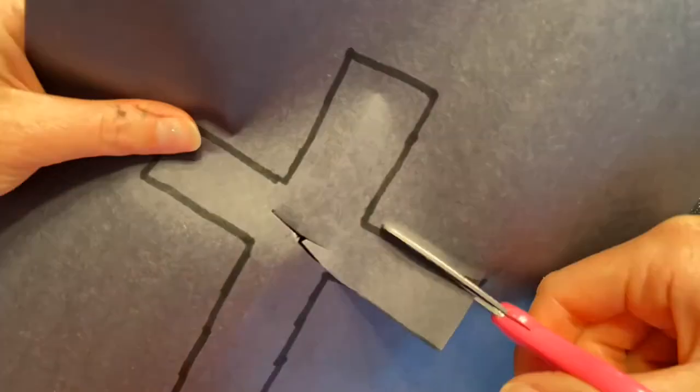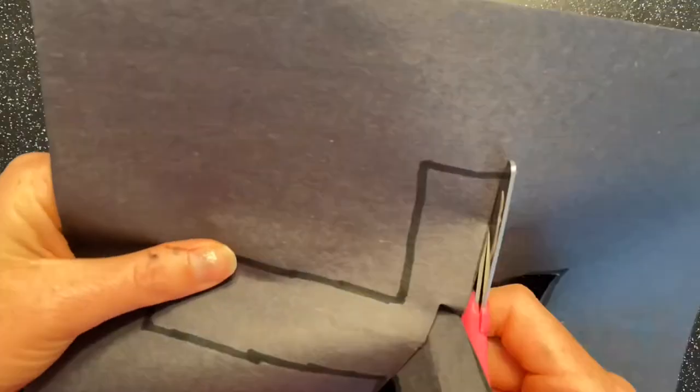Fold your cross and cut a slit in it, then cut your cross out so that you have a cross inside of your black construction paper.